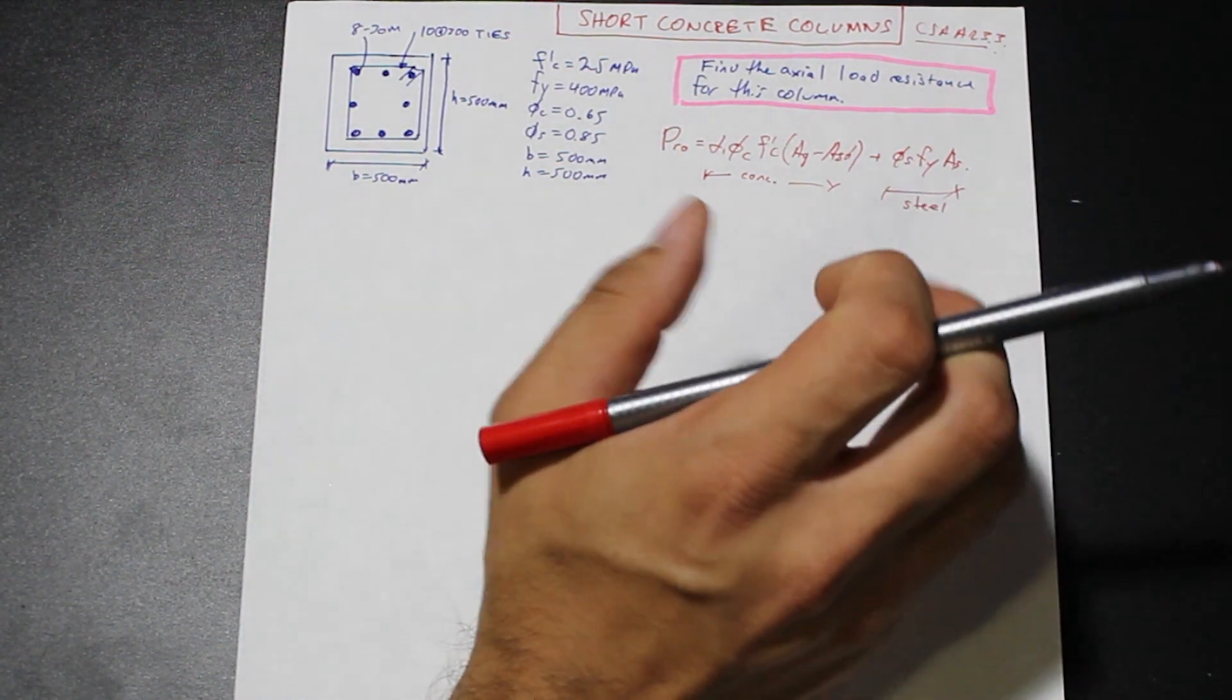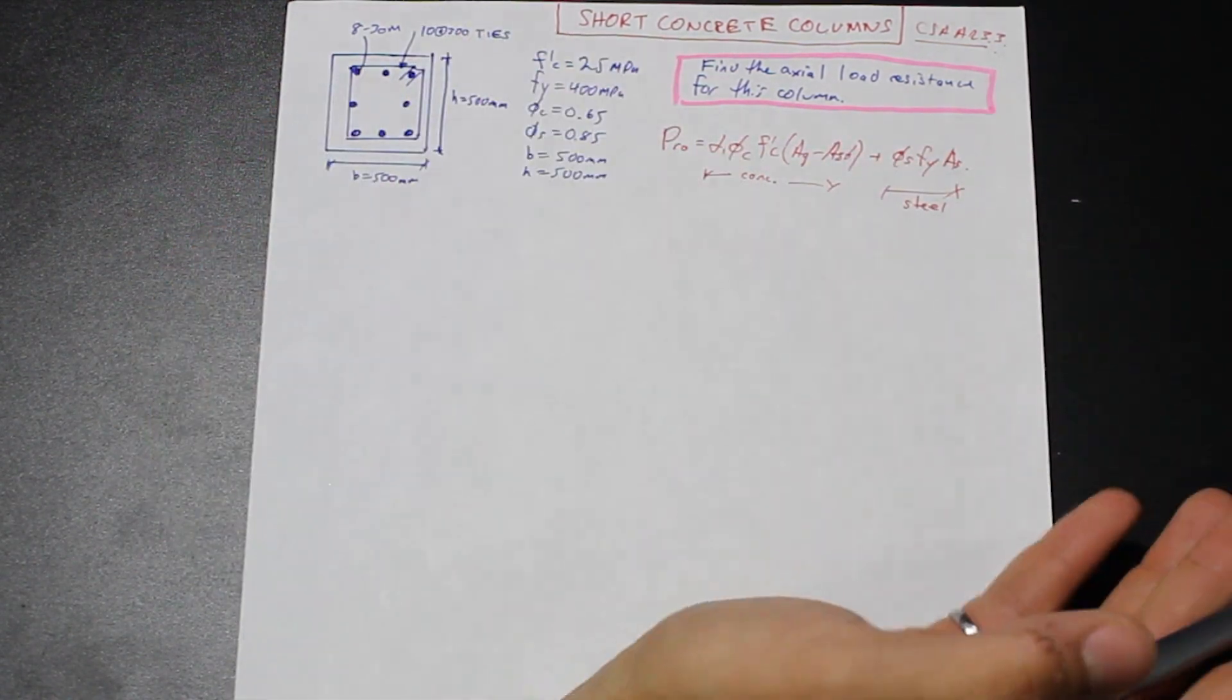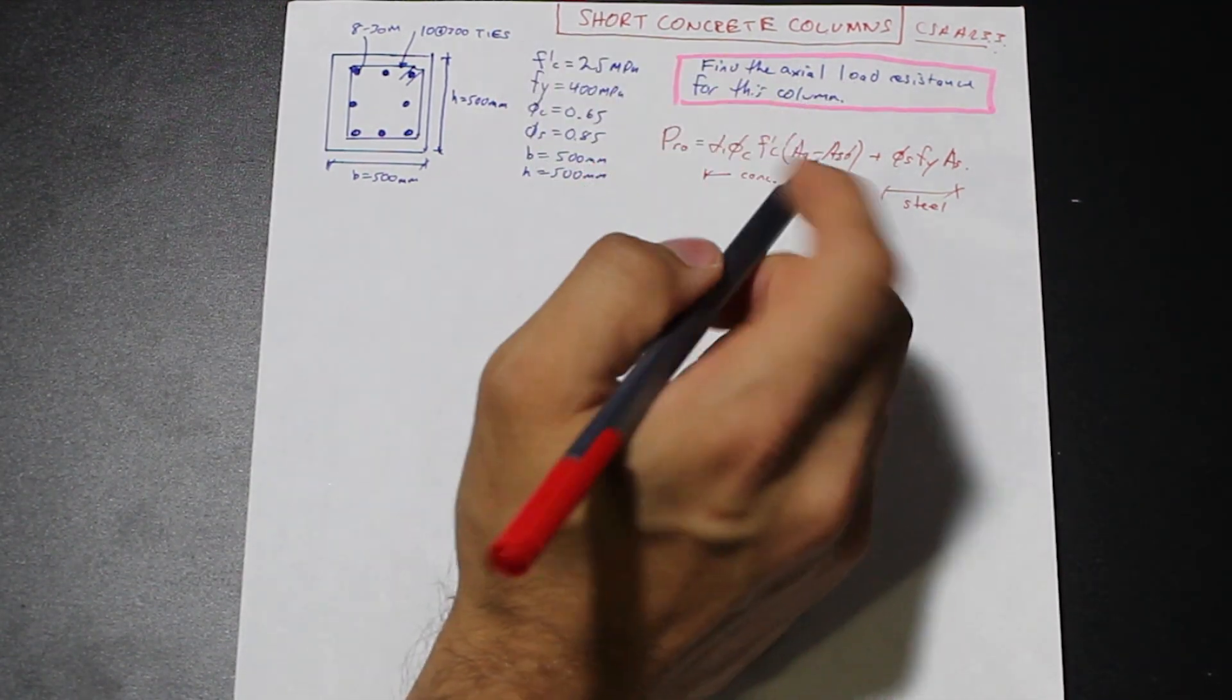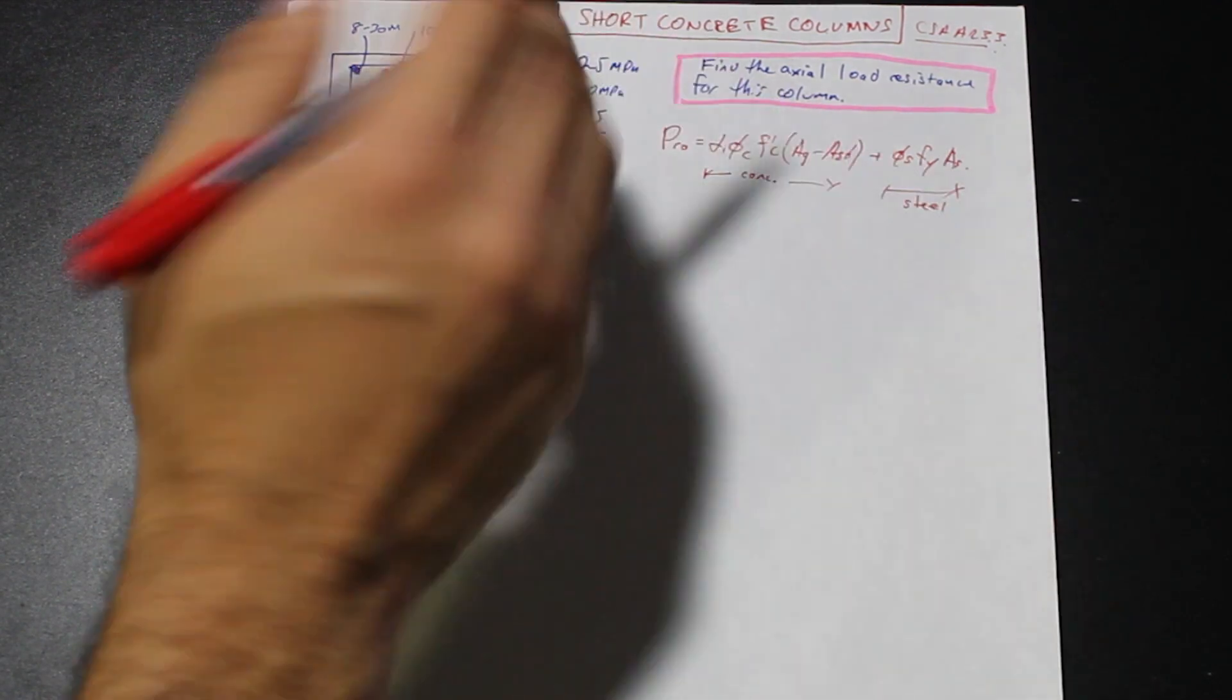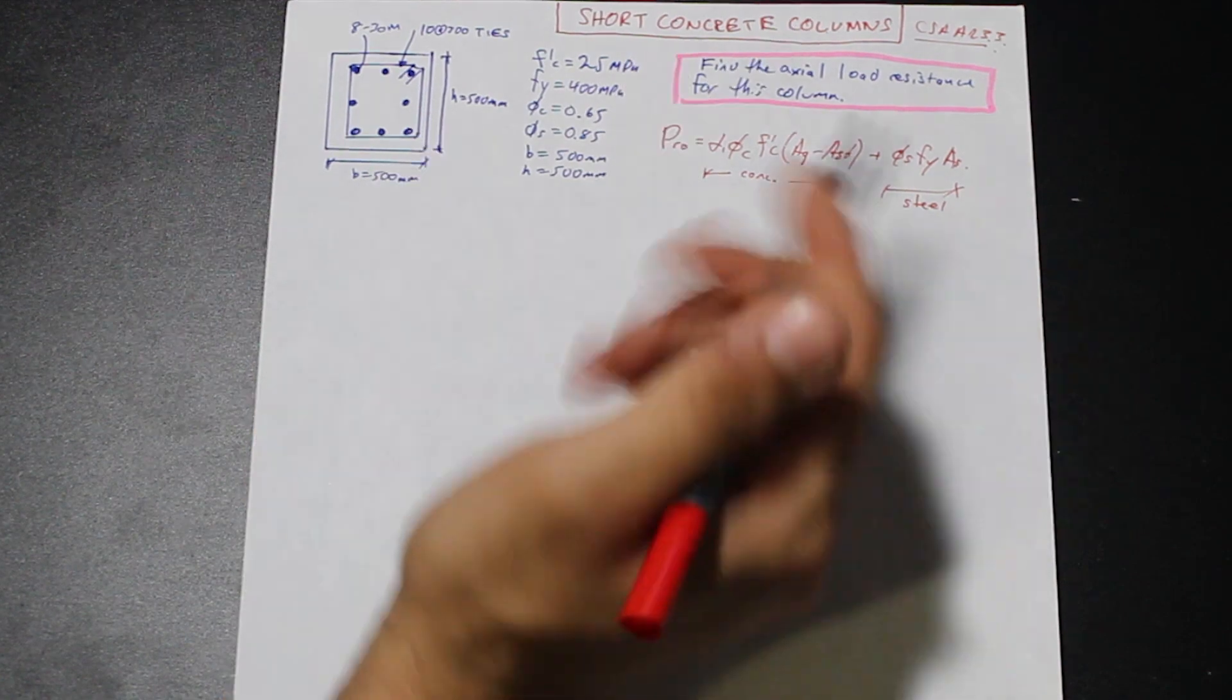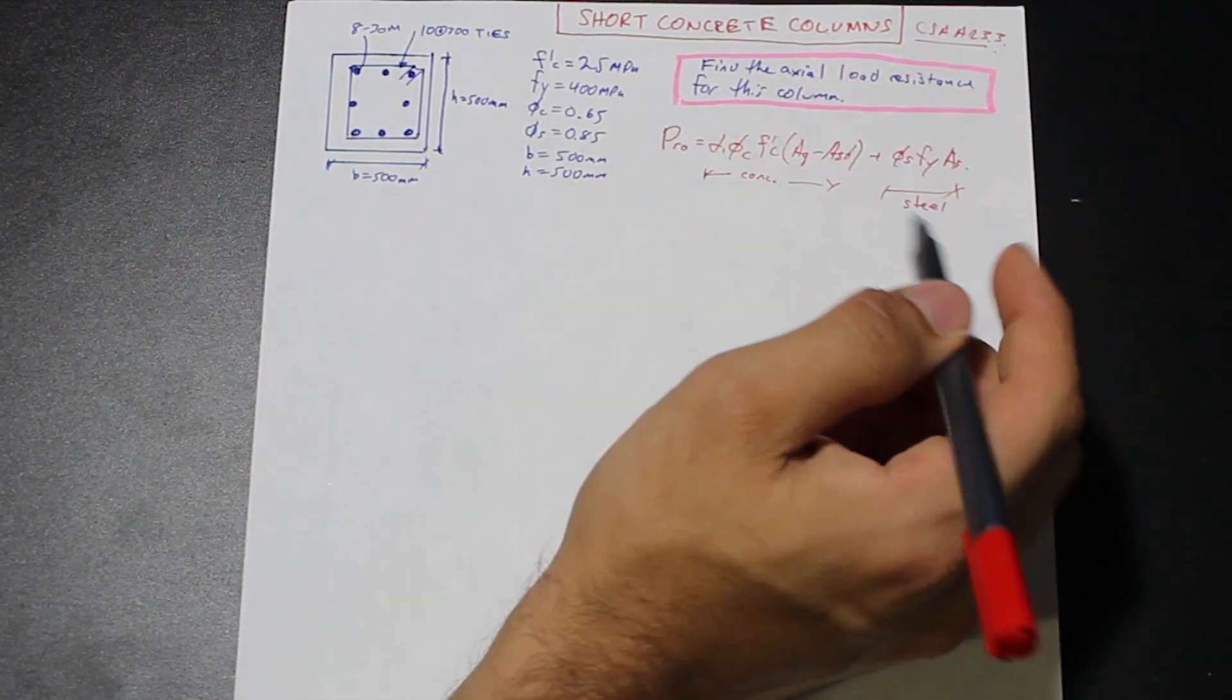Now the code specifies, depending on the type of column we have. So we have a square column that's confined here. So the concrete code describes a reduction factor. So the reduction factor for tied columns depends actually, once your smallest dimension decreases past 300, your reduction factor starts to increase. You get less capacity.